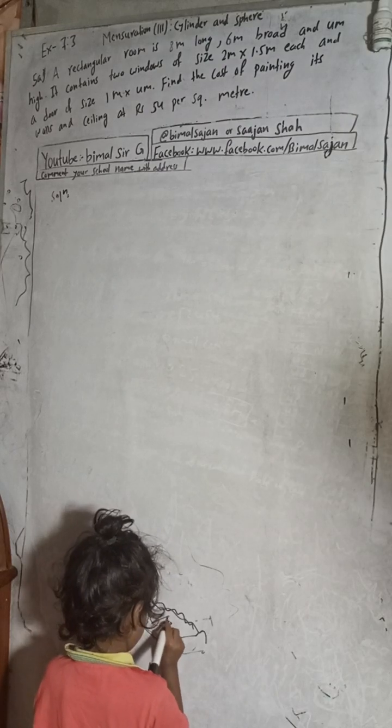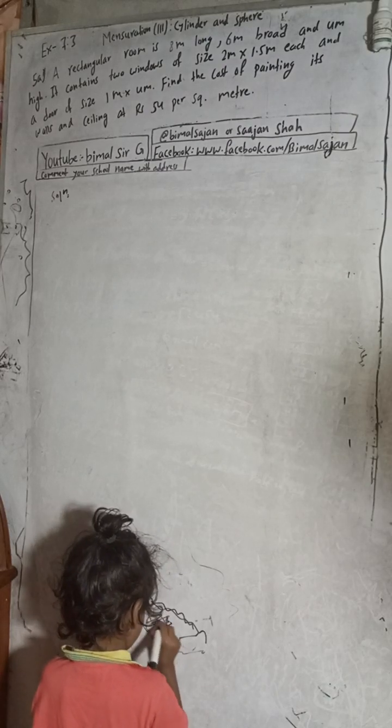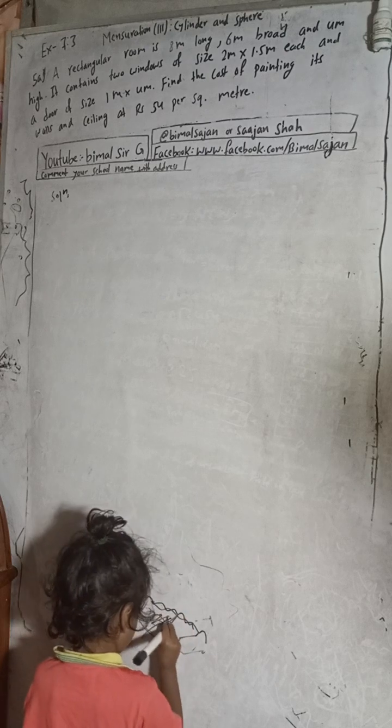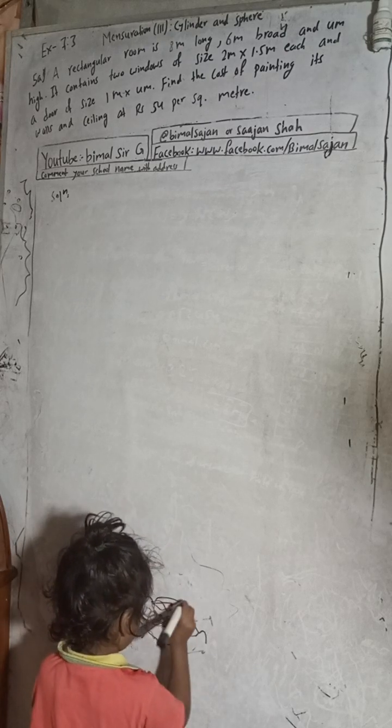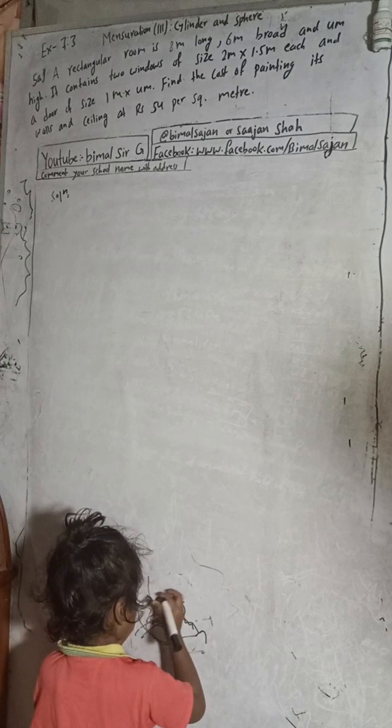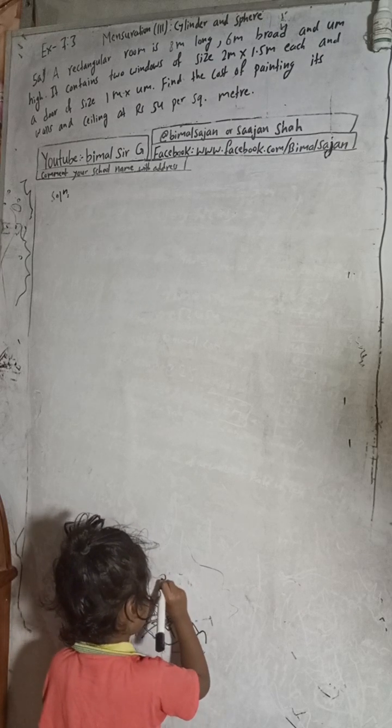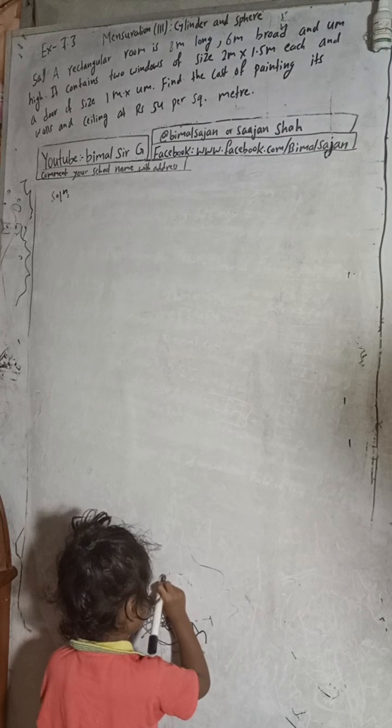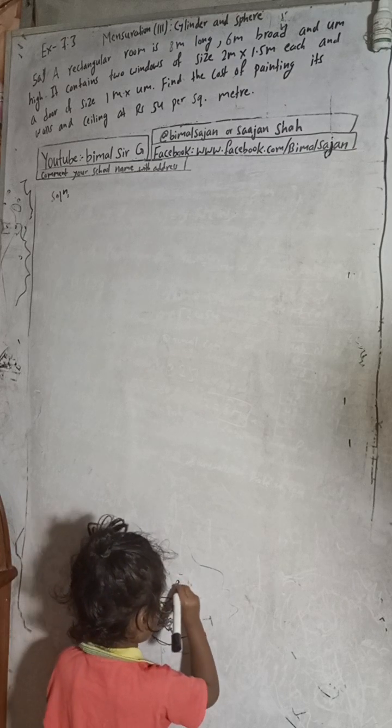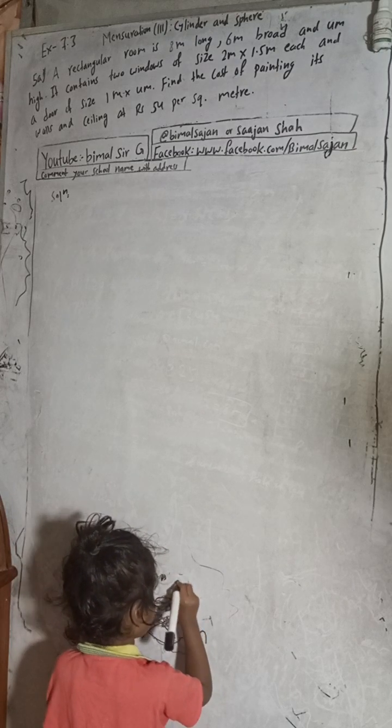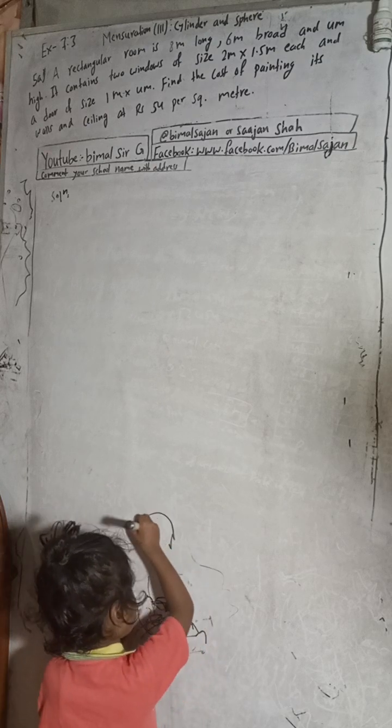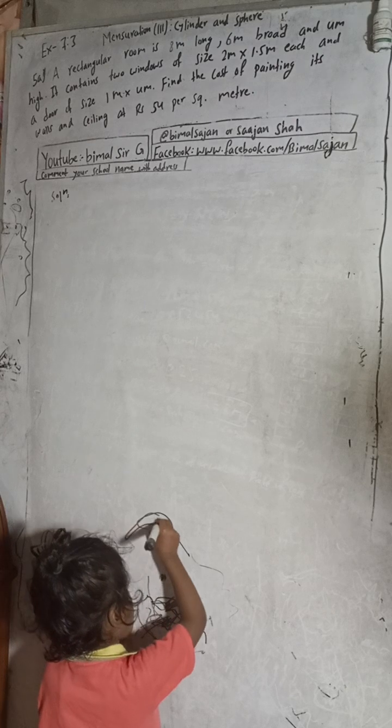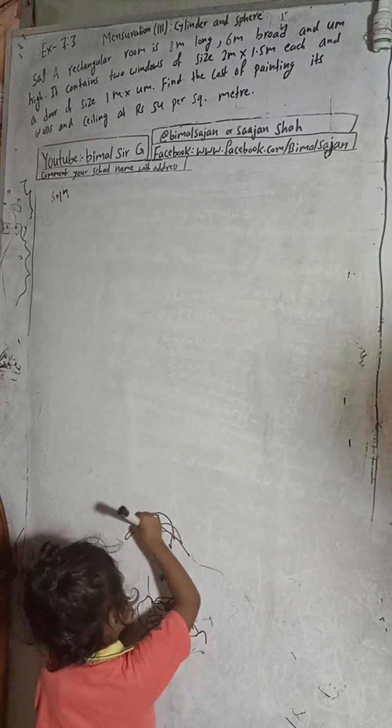Hi class 9 and 10 students, welcome back to Bimal Sarji YouTube channel. This is question number 5a, exercise 7.3, mensuration third part, cylinder and sphere, class 9 compulsory maths. If you check the playlist of Bimal Sarji, then you will get solutions of class 9 and 10 optional maths, compulsory maths and science as well.